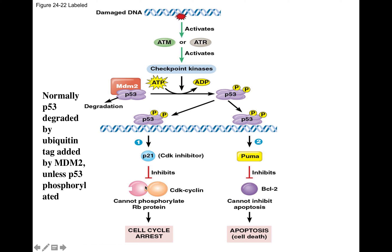During cell cycle arrest, P53 can stop the cell from entering S phase and recruit DNA repair mechanisms to the site of damage, such as non-homologous end-joining and SDSA. The cell holds in arrest to see whether the DNA can be repaired. If the damage is too extensive to repair, P53 can activate transcription of a gene called PUMA, which inhibits a channel in the outer mitochondrial membrane called BCL2, starting a cascade that leads to cell death — apoptosis.